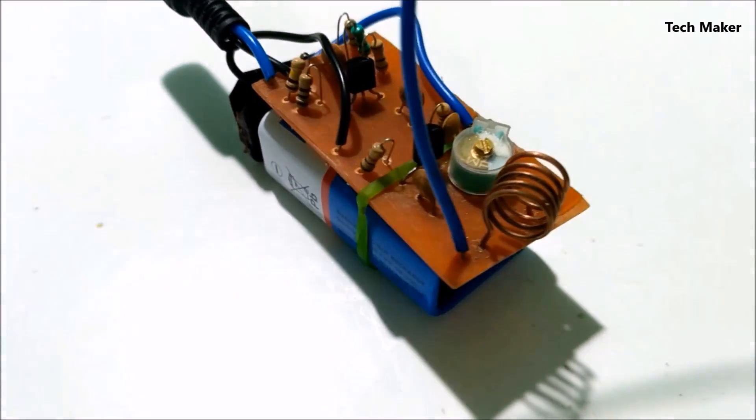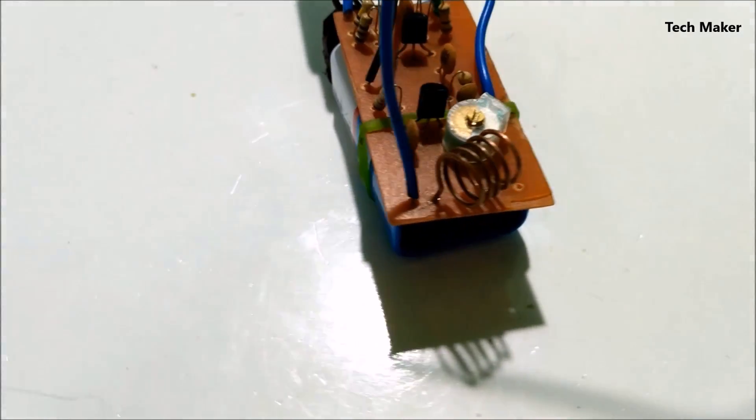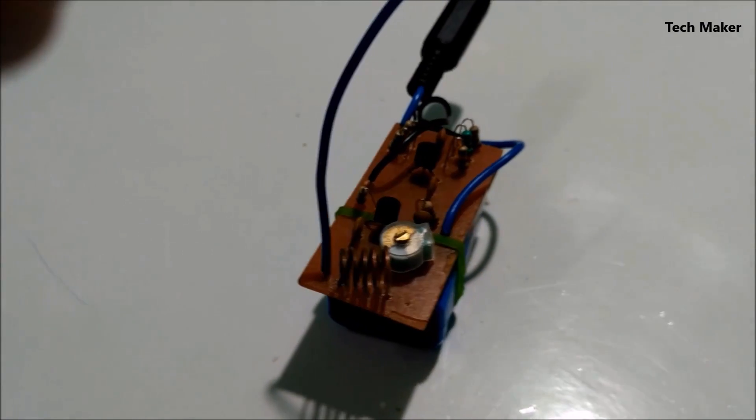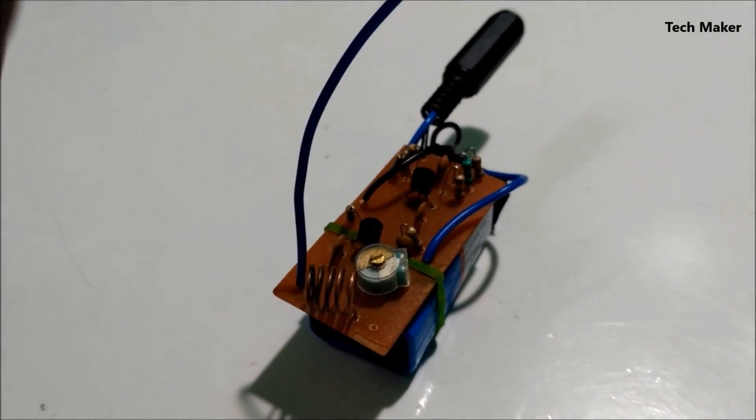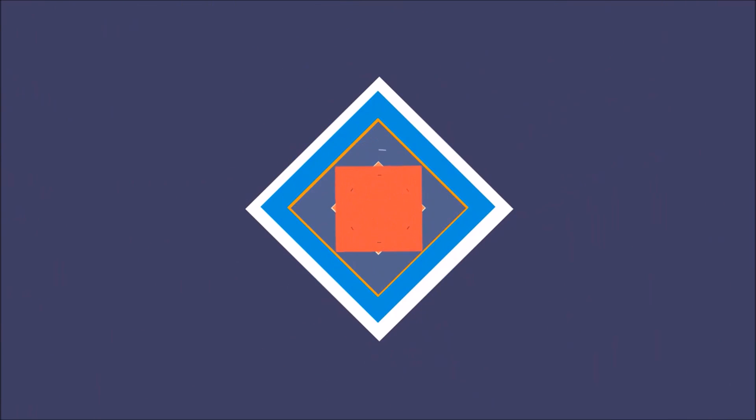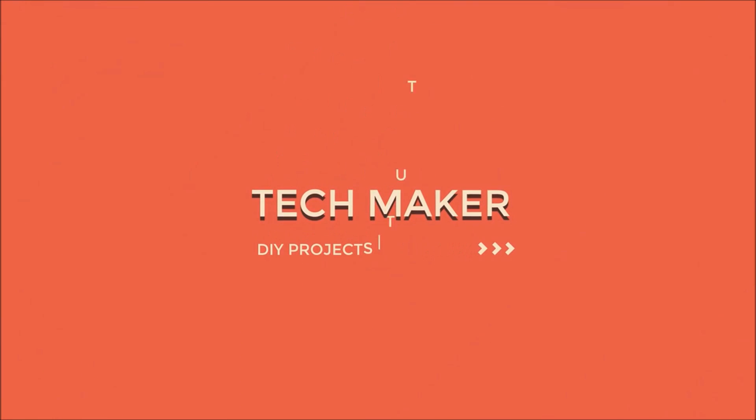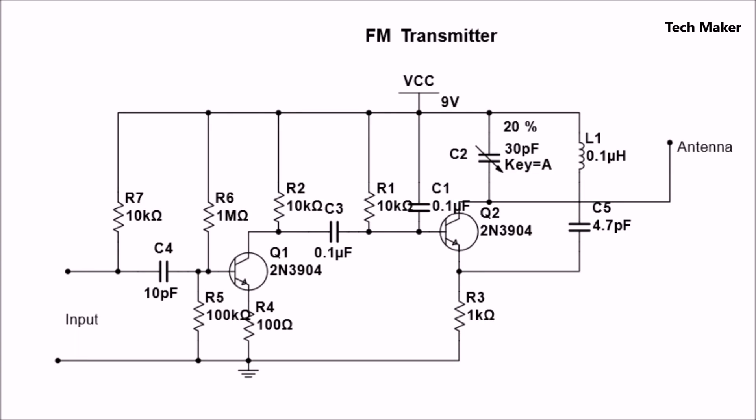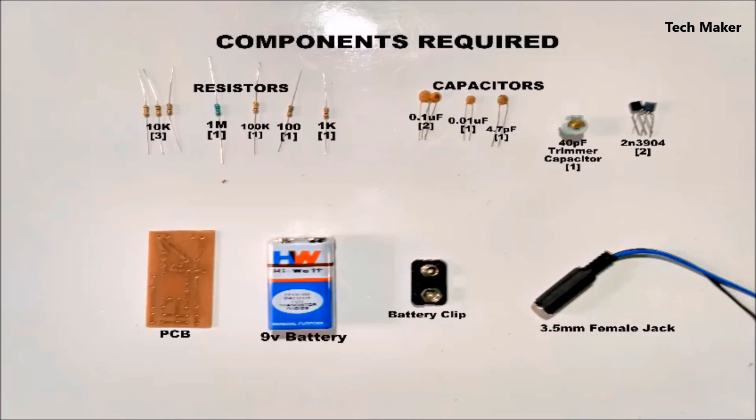Hello guys, in this video I will show you how to make an FM transmitter by using a 2N3904 transistor. Let's get started. This is the circuit of the FM transmitter. These are the components required to build the transmitter.